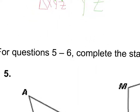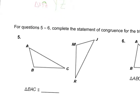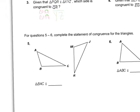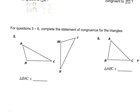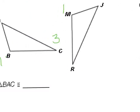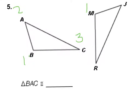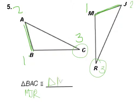For questions five through six, complete the statement of congruence. They tell you triangle BAC is congruent to — and you've got to fill it in. The order matters, so we figure out where they started. I'll label the points: started at B as one, two, three. Looking at where the sides are, B and M are the same, so that's one. Going to the short side first, J is two. Then R is the corner at the end. So it's congruent to triangle MJR.